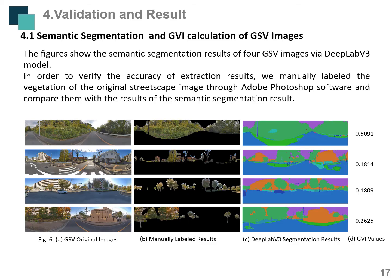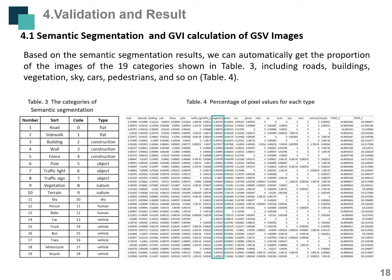The fourth section is validation and results. This figure shows the semantic segmentation results of four GSV images based on our proposed method. The first column shows the original street-view images, the second column shows manually extracted vegetation through Adobe Photoshop, and the third column shows the semantic segmentation results. The last column shows the GVI value calculated based on equation 2. From the results, most vegetation pixels in the GSV images were correctly delineated. Based on the segmentation results, we can automatically obtain proportions of 19 categories including roads, buildings, vegetation, sky, cars, and pedestrians.